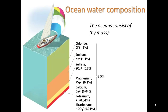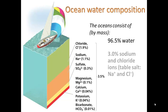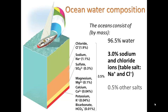The composition of ocean water is as such: 96.5% of it is water, 3% is sodium and chloride ions which is table salt, and 0.5% is other salts.